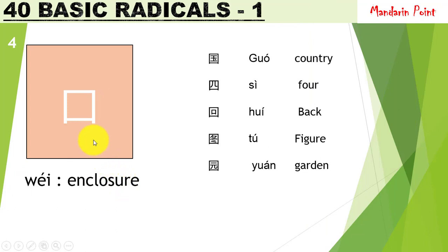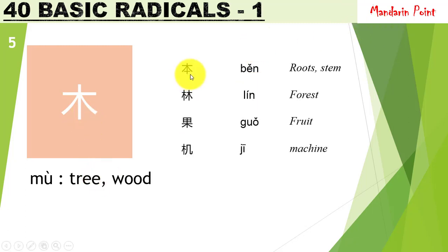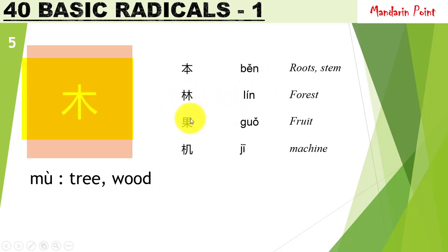The radical 囗 wéi functions as an enclosure or box — it has different characters inside it. Whenever you see a character enclosed in this box, that is wéi. Next is 木 mù, meaning 'tree' or 'wood,' which represents anything or any activity related to trees or wood. For example, 本 běn meaning 'roots, stem, or origin' — mù with a horizontal stroke at the bottom representing the base of a tree. 林 lín meaning 'forest' shows two trees together. 果 guǒ meaning 'fruit' has a tree. And 机 jī meaning 'machine' — in older times machines were made of wood.